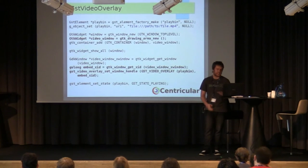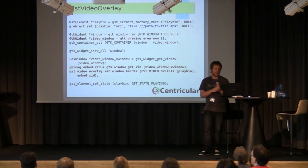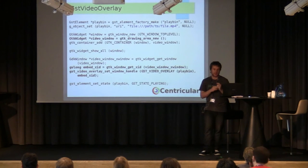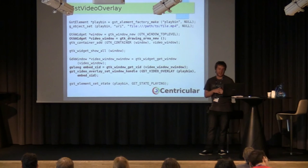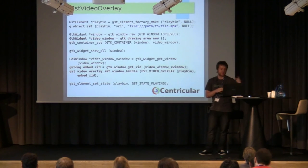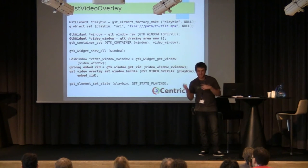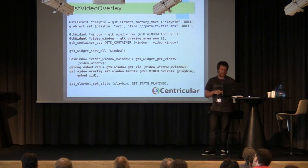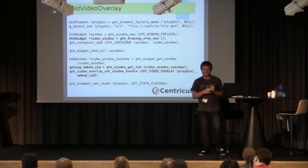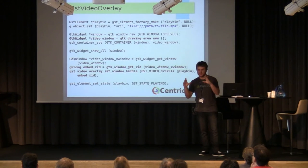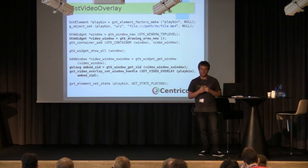This is an example of how the GST video overlay interface works. You use play bin — a generic play-anything element — and set a URI to some file or network stream. Then create a window and a drawing area. Then comes the platform-specific stuff — for X11 you get the X11 ID, put that into GStreamer, and then the sink displays the video in that window handle into your GDK application.